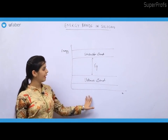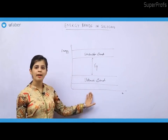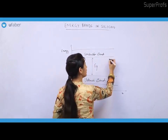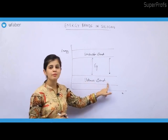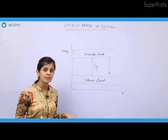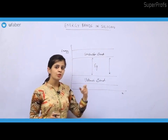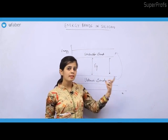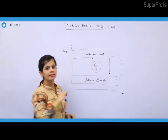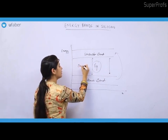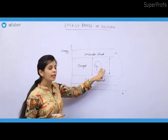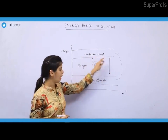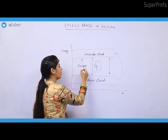Let us take our discussion forward with the energy band diagram. In this energy band diagram, we have discussed what a valence band is and what a conduction band is. In case of silicon, there is a gap between the valence band and conduction band. The electrons in the outermost energy shell should gain some energy to move from valence band to the conduction band. The amount of energy required is denoted by EG, which is the band gap or energy gap required by electrons to jump from the valence band to the conduction band.